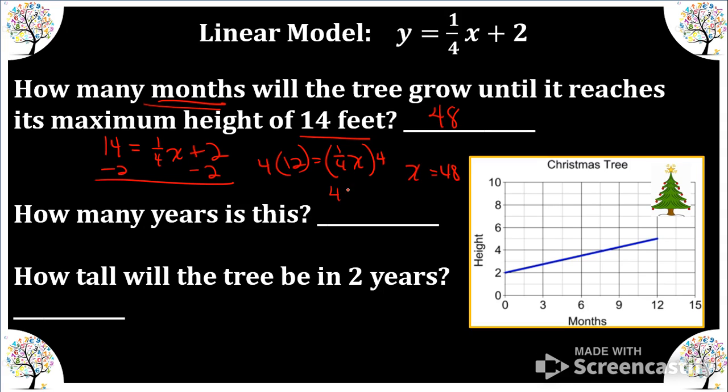How many years is this? Well, there are twelve months in a year, so that equals four years. How tall will the tree be in two years? Well, in four years, it's fourteen feet. Half of four is the two years, so half of fourteen is seven.